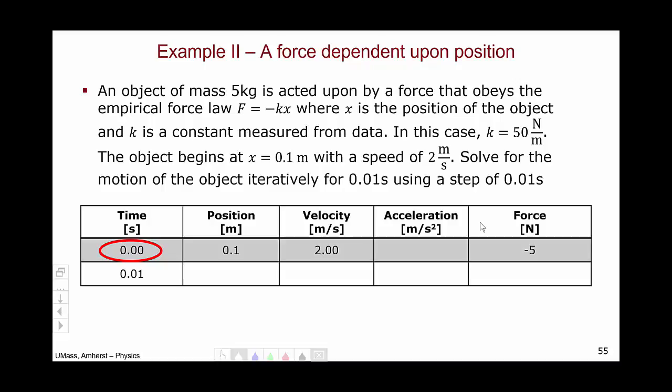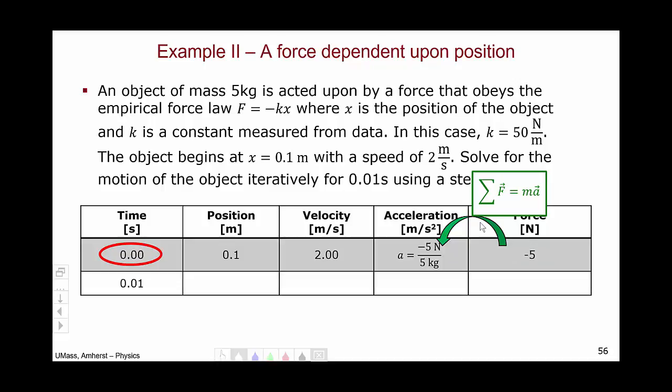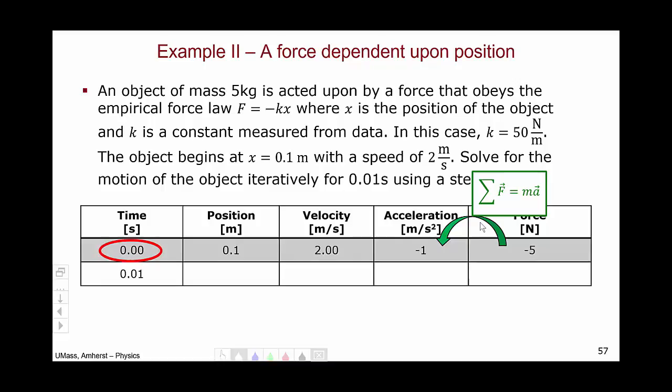Solving the problem, we get a force of minus 5 newtons. Now we can move on to solving for the acceleration using Newton's second law, f equals ma. A minus 5 newton force divided by 5 kilograms gives us an acceleration of minus 1 meters per second squared.